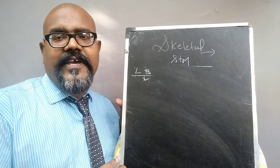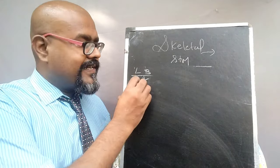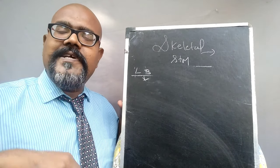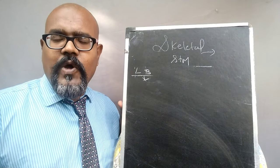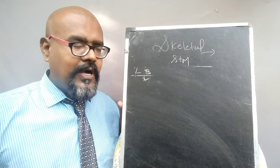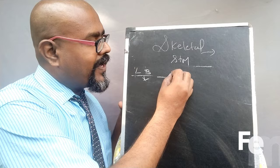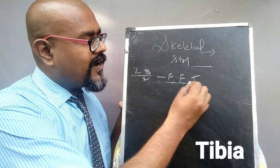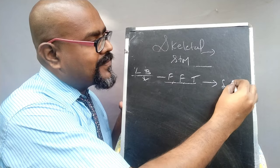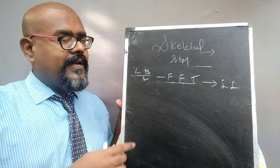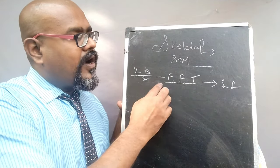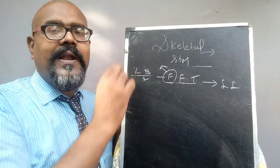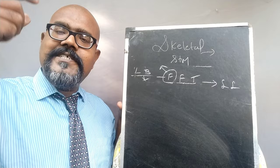The next classification of bone according to size is the long bone. The name itself shows it looks long. Most of the bones present in your upper limbs and lower limbs are considered long bones. Especially the femur, fibula, and tibia — these three are present in the lower limbs, in the leg region. Among these, the longest bone is the femur, which connects the pelvic region and the knee.